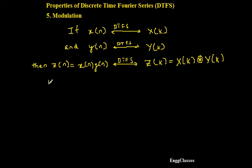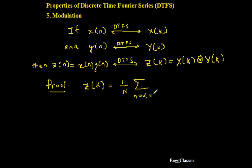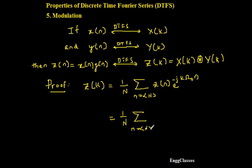So now we shall consider the proof for the same. We know that z of k, using the DTFS straight formula, is equal to 1 over N, summation n over the range capital N, of z of n e to the power minus j k omega 0 n.